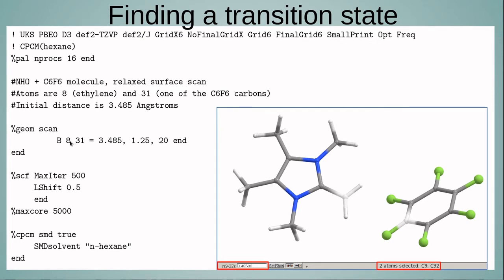Basically, atom 8 is the olefin carbon, and 31 is one of these—the marked carbon in the hexafluorobenzene. I start from the distance that I already had in the structure, 3.485 angstrom. I finish at 1.25, which I later realized was too short for a carbon-carbon bond. I could have gone to 1.35, would have been the same. I go in 20 steps. So I put end.